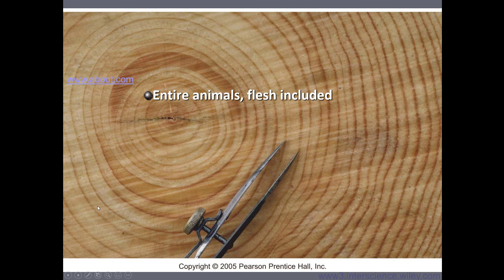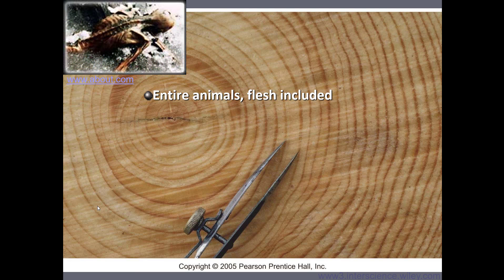Some fossils preserve the entire animal, flesh included. A famous example is Otzi the Iceman from the Italian Alps. Otzi was being chased from an Italian village — he had an arrow in his back, a club foot, and Lyme disease. When he fled to the high elevations of the Alps, he froze to death, preserving most of his body. Scientists have studied him in detail. Similar preservation occurs with baby woolly mammoths found frozen in Siberian permafrost, discovered every five to ten years or so.